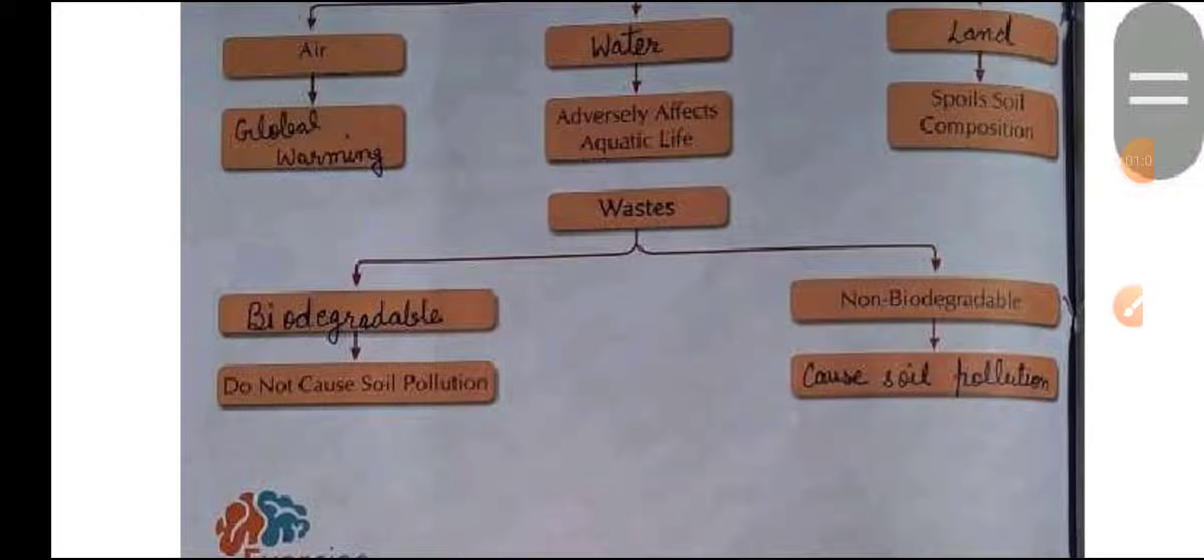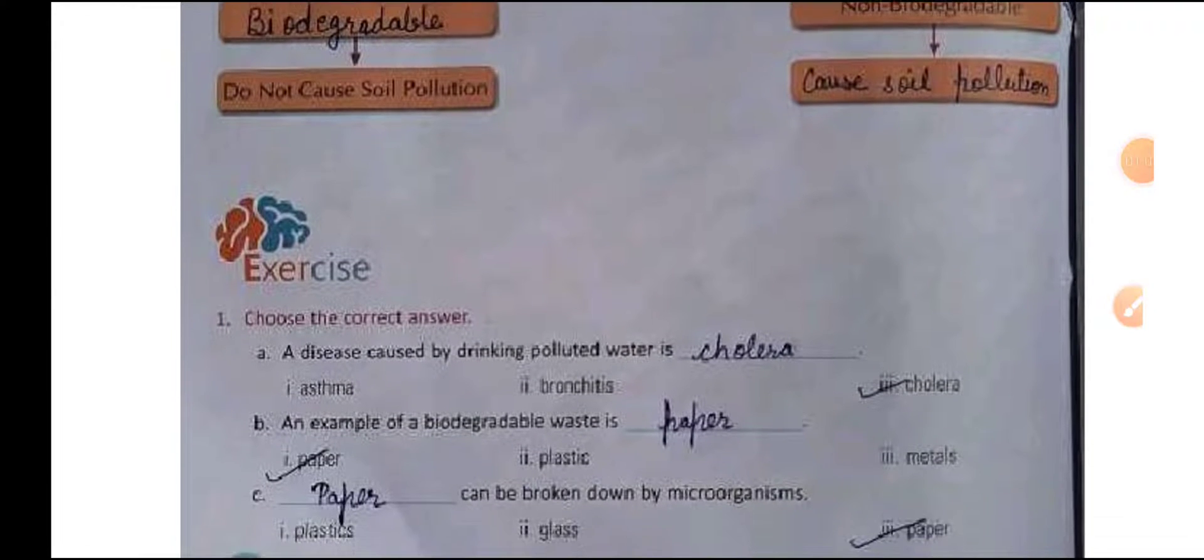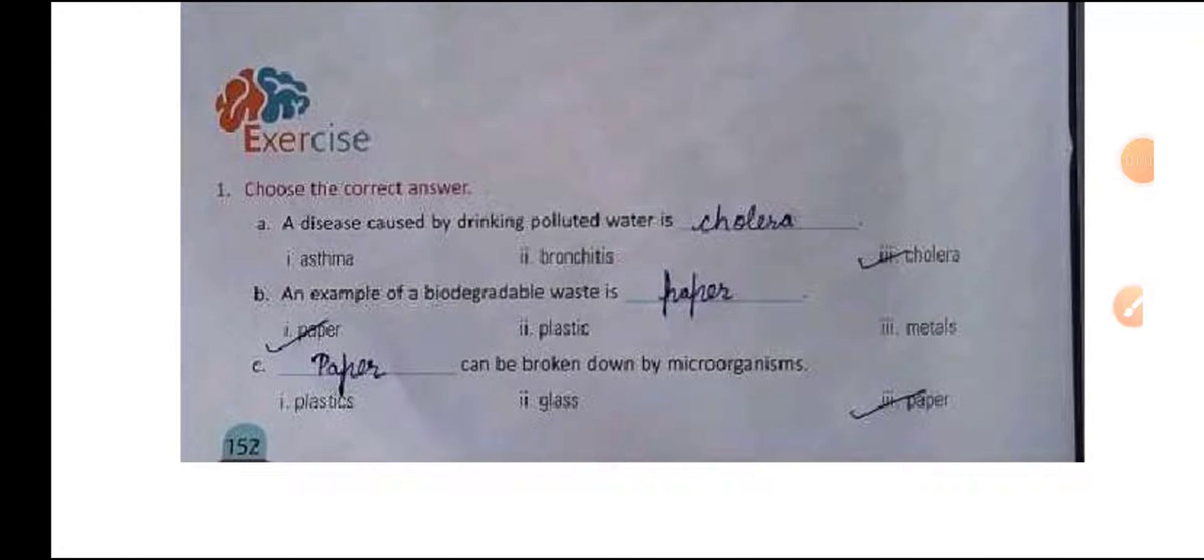Come on next question. Answer: choose the correct answer. Number A: disease caused by drinking polluted water is cholera. Next, an example of biodegradable waste is paper. Next, paper can be broken down by microorganisms.